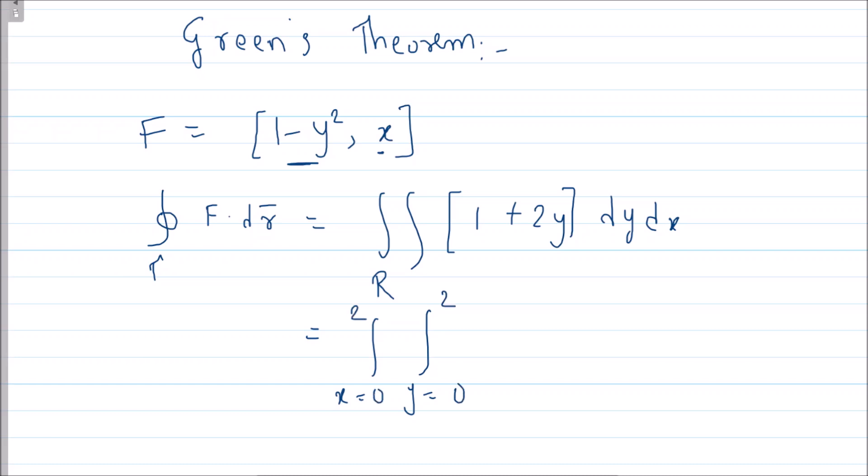So we get the integral from 0 to 2, 0 to 2 of (1 + 2y) dy dx. Or if you want, you can do dx dy as well. When you integrate with respect to x, I have double integral of (1 + 2y) dy. Now I'm not going to solve this further, so just solve this and tell me the answer in the comment section. Thank you.